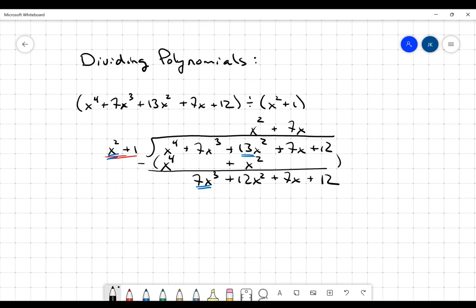When I multiply 7x by the divisor, that is going to get me 7x cubed plus 7x.